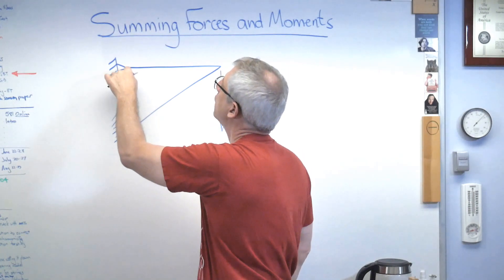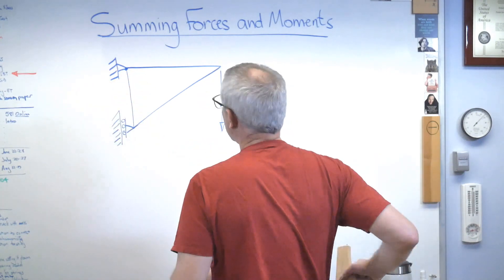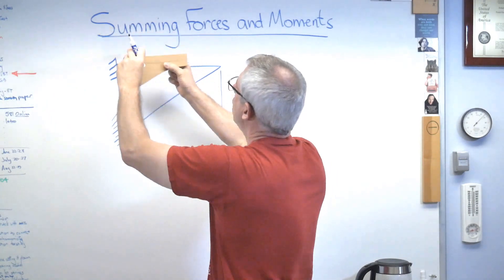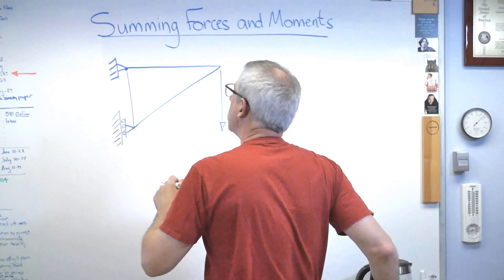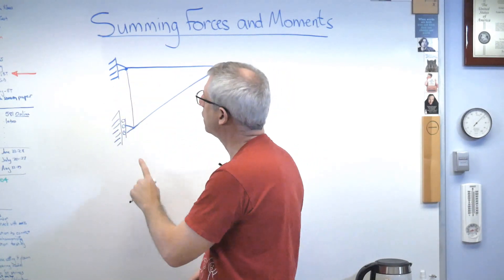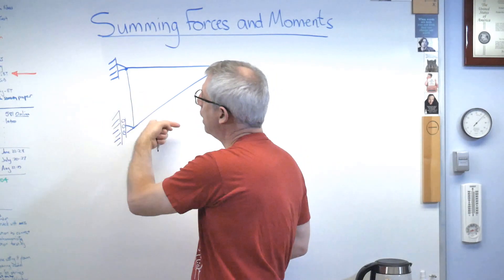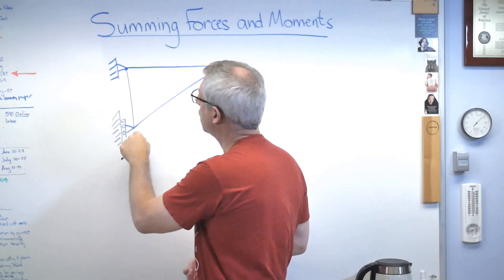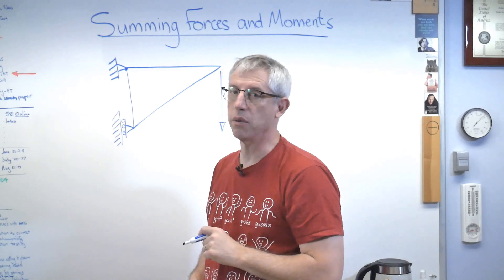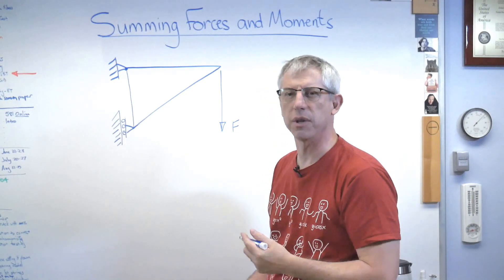That pin means this can rotate about that point — my block can rotate but cannot translate. This other symbol is meant to be a roller: it's allowed to move up and down if it wants to, but it cannot move horizontally. So the pin can have reaction forces in two directions, while the roller can only resist forces in one direction — horizontal.